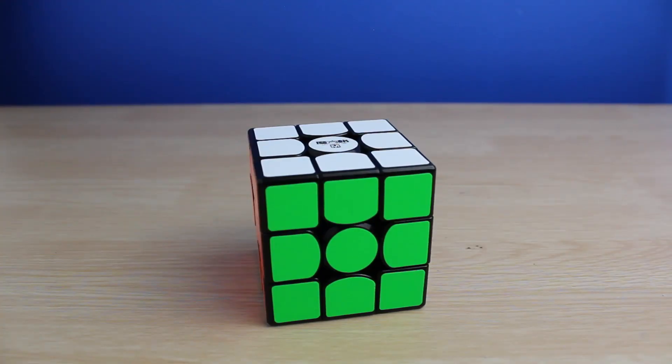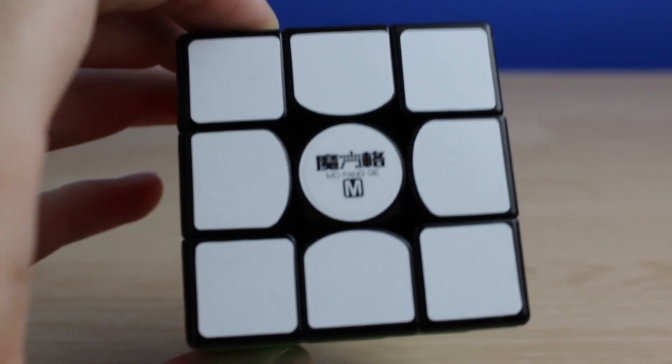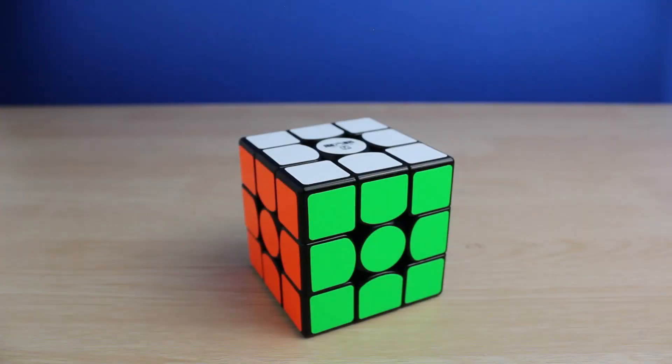What's up YouTube, and in this video I'll be converting this Qiyi Wu Wei M into a stickered GAN XS. Now I was gonna get the GAN XS, but I thought I only average about 28 seconds and it's really expensive, so do I need a cube that good? And the answer is no.